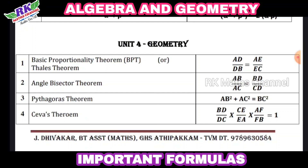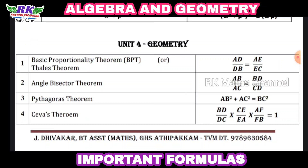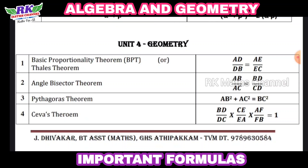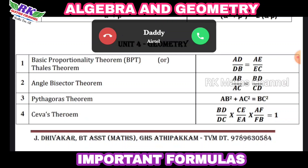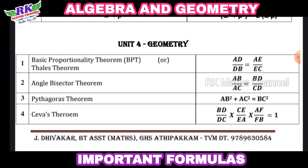Next, look at Pythagoras theorem. We first encountered this in 7th and 8th grade. The theorem states that the square of the hypotenuse equals the sum of the squares of the remaining two sides: AB² + AC² = BC².